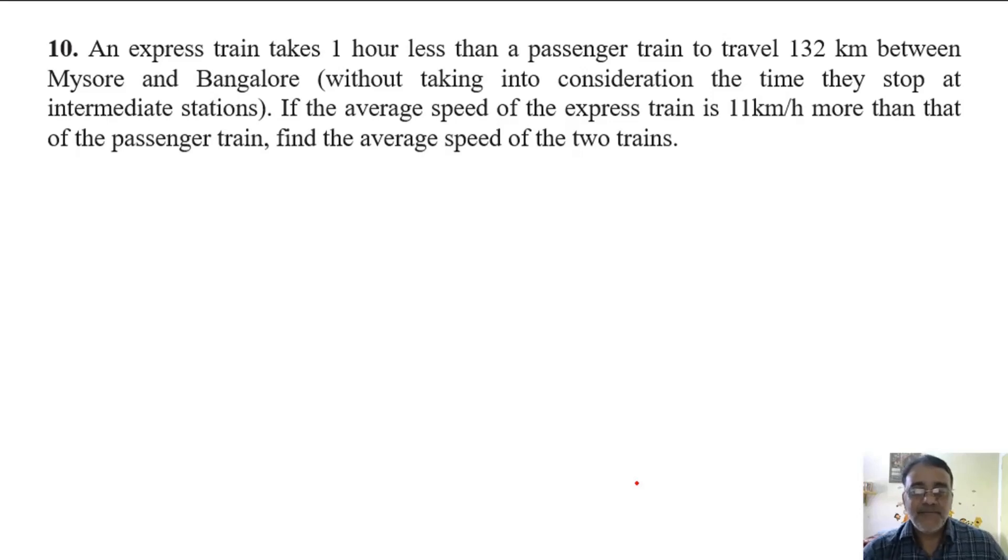An express train takes 1 hour less than a passenger train to travel 132 km between Mysore and Bangalore without taking into consideration the time they stop at intermediate stations. If the average speed of the express train is 11 km per hour more than that of the passenger train, find the average speed of the two trains.